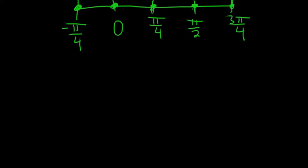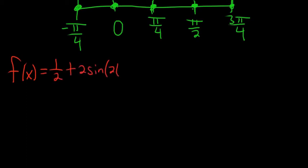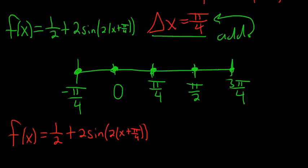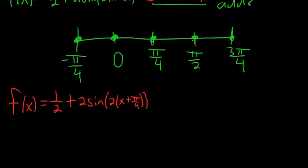I'm going to write down our function one more time. So f(x) equals 1/2 plus 2 sine of 2x plus π/4. Yes, that's the right one.